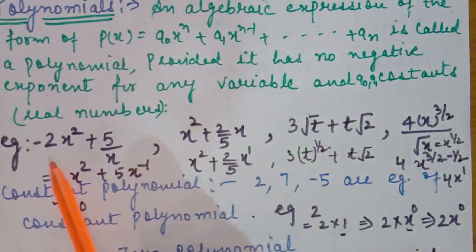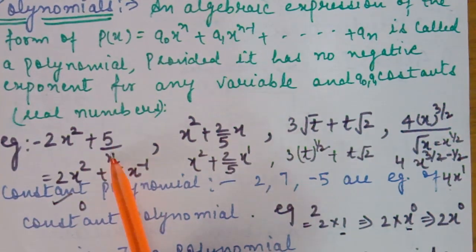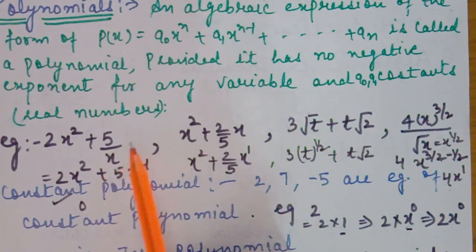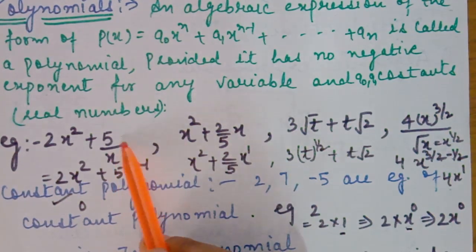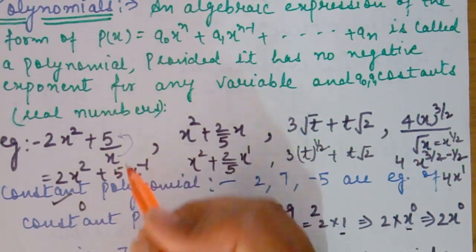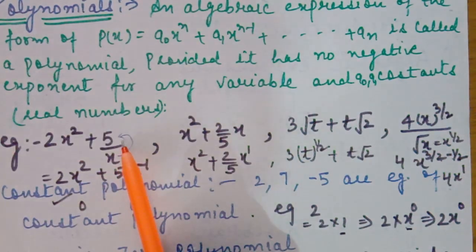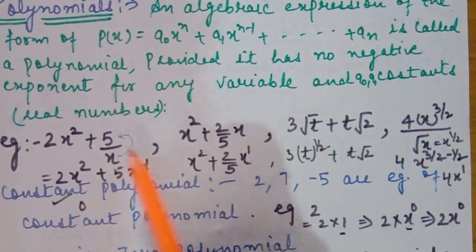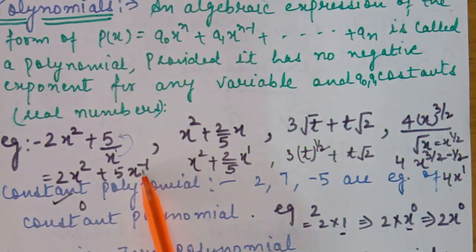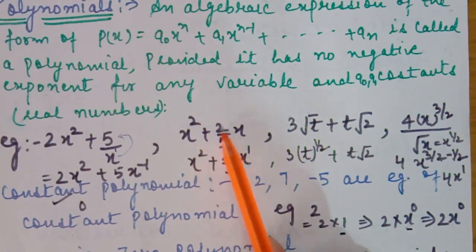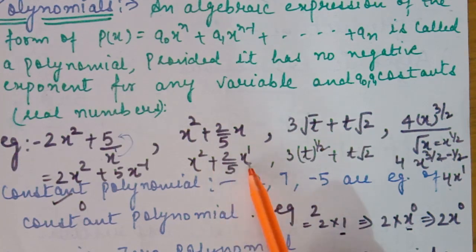Now we will discuss some examples. First example: 2x squared plus 5 upon y — is this a polynomial or not? We solve it: 2x squared plus 5y⁻¹. When we shift from the denominator to the numerator, the sign of the power changes from positive to negative. So y becomes y raised to the power minus 1. This is not a polynomial because we have a negative power, which is not allowed.